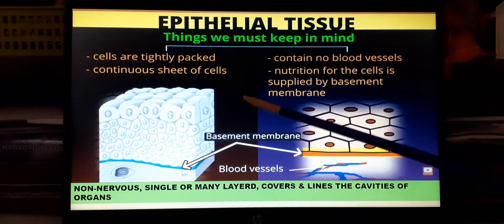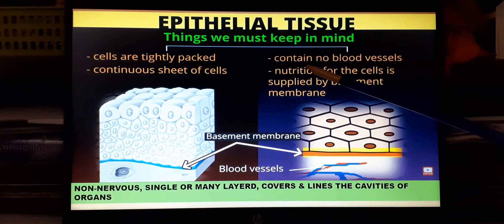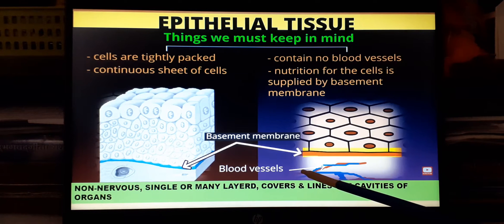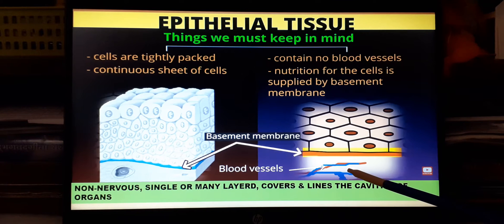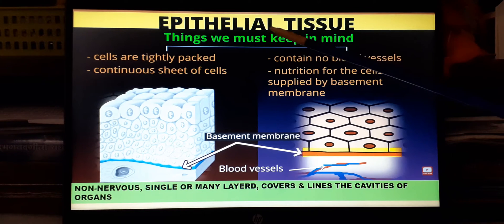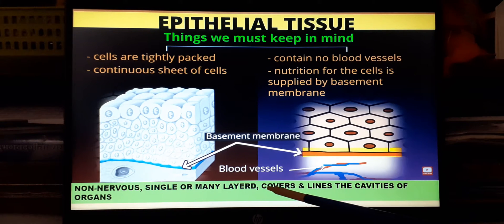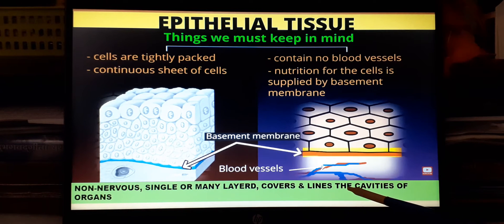There are no blood vessels or nervous tissue in the epithelial tissue region. Whatever blood vessels or nerves are present run from the lower portion of the basement membrane, so the basement membrane helps in provision of nutrition. These epithelial tissues cover the whole body and its organs, and also line the body cavities and various organs.